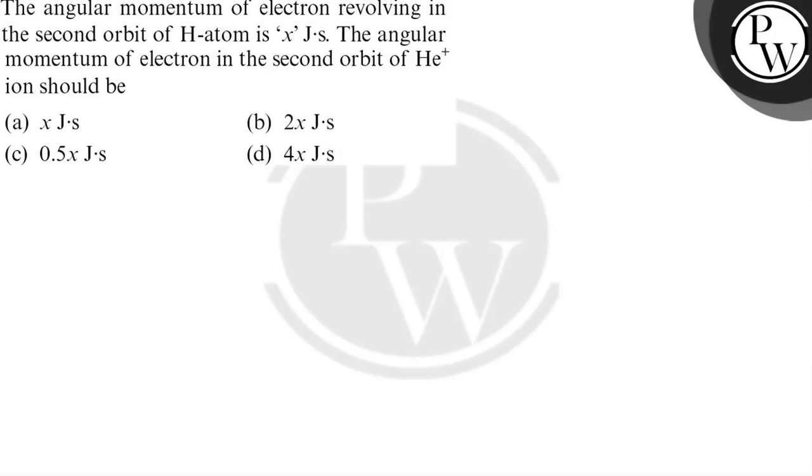Hello guys, let us read the given question. The angular momentum of electron revolving in second orbit of H atom is x joule seconds. The angular momentum of electron in the second orbit of He+ ion should be.